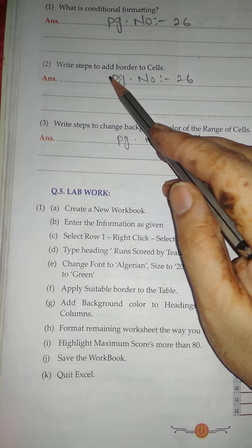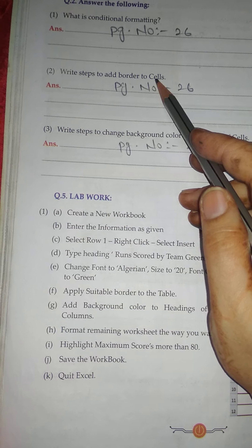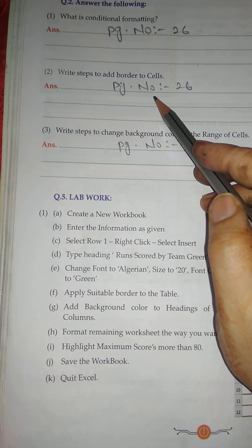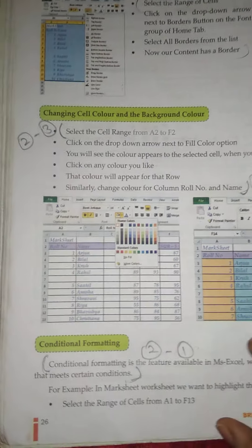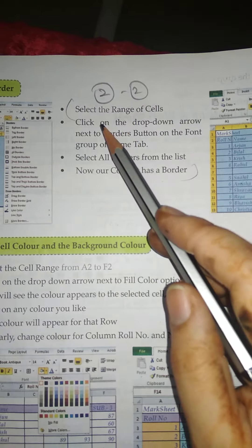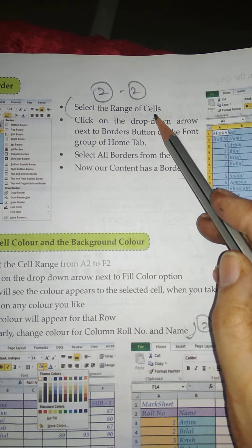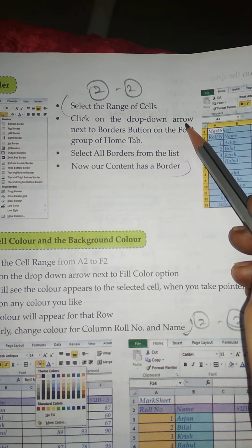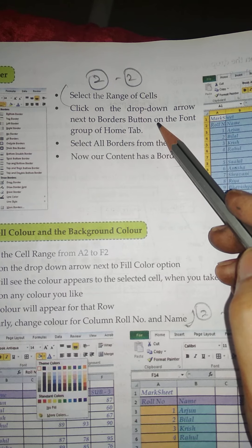Number two: Write steps to add border to cells. Answer is on page number 26. Select the range of cells. Click on the dropdown arrow next to Border Button on the Font Group of Home Tab.